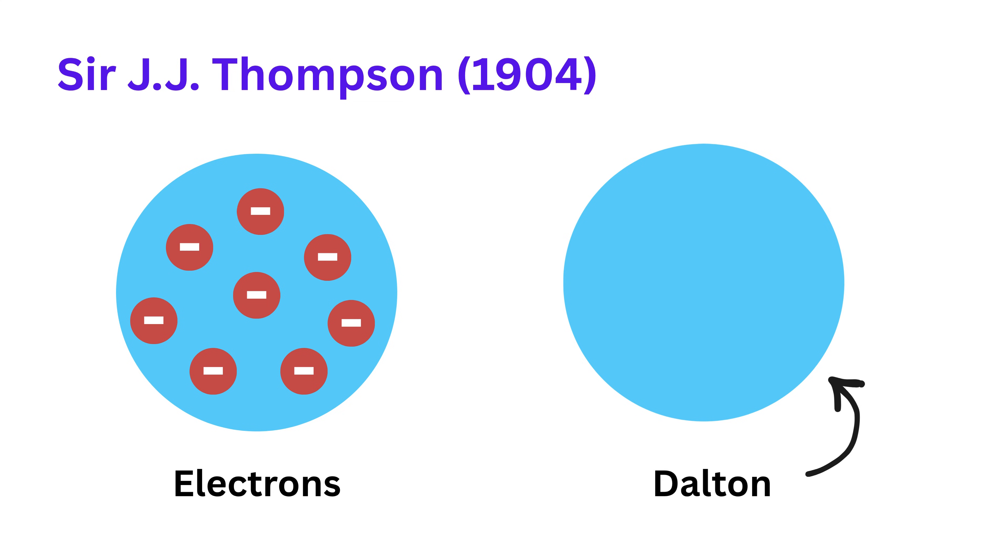Dalton had said that atoms were solid, but Thompson said that if atoms have negative electrons, then there must be some kind of positive charge, too, to keep the atom balanced.